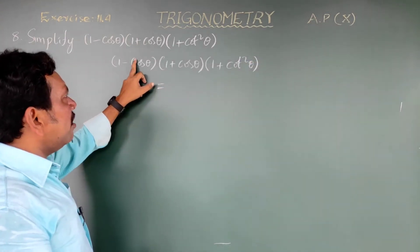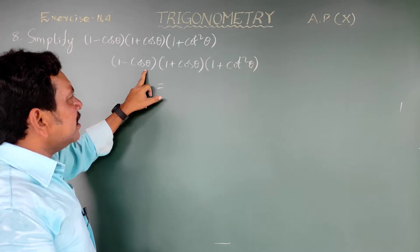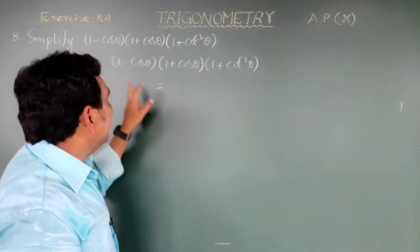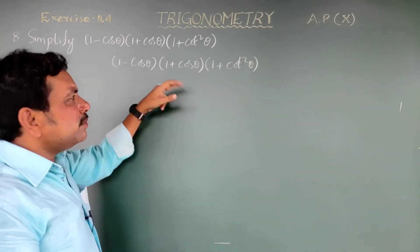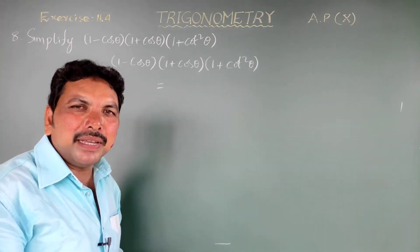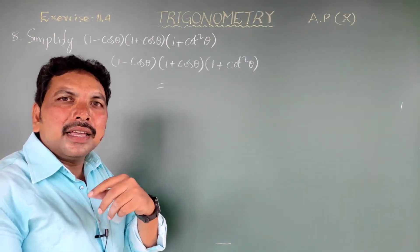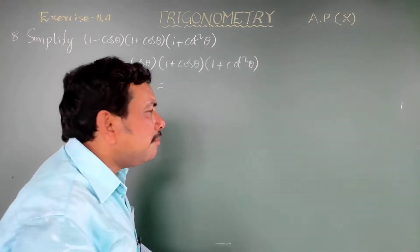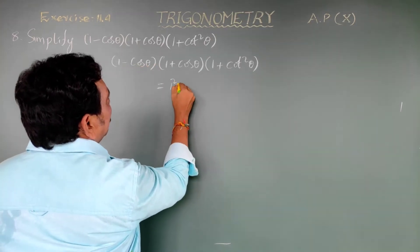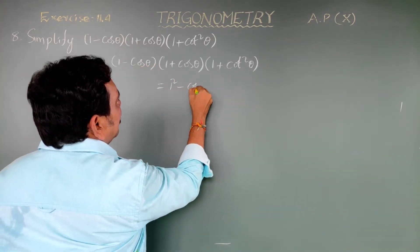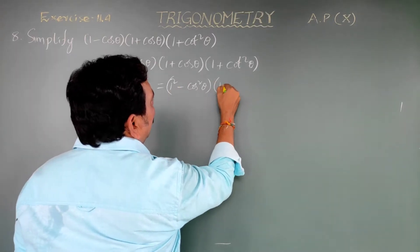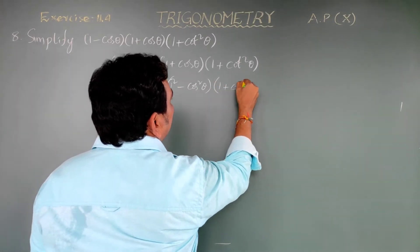Look here — (1 minus cos theta) into (1 plus cos theta) is in the form of (a minus b) into (a plus b), which equals a square minus b square. So this becomes 1 square minus cos square theta, into (1 plus cos square theta).